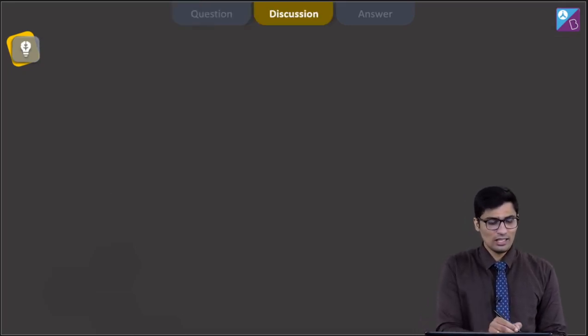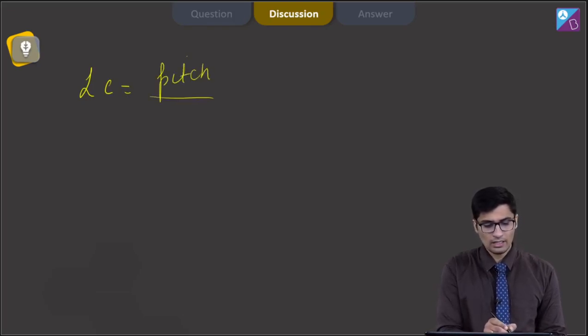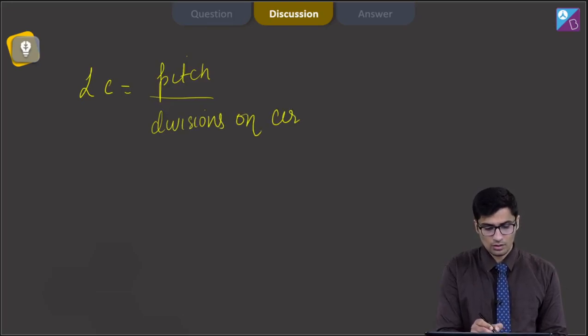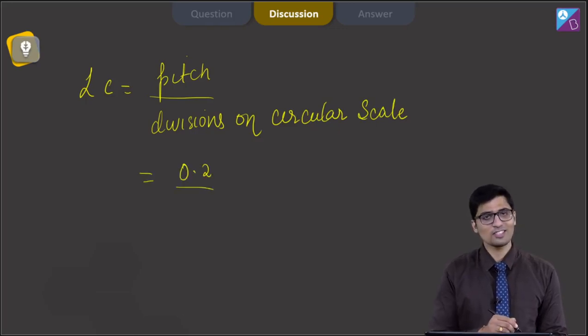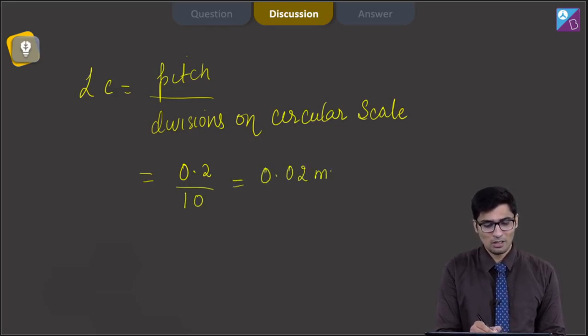Dear students for a screw gauge, the least count can be simply written as the pitch of the screw gauge by the number of the divisions on circular scale. Now in the given question, the pitch is given as 0.2 mm, while the number of divisions on the circular scale are 10, so this will be 0.2 by 10, giving us a value of 0.02 mm.